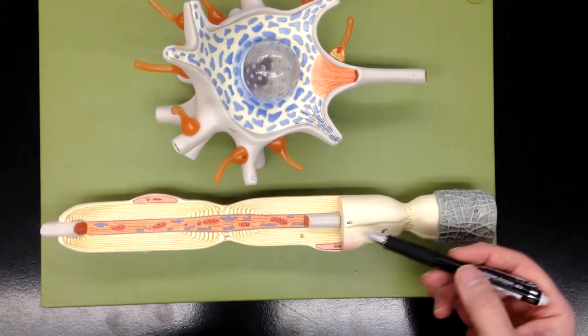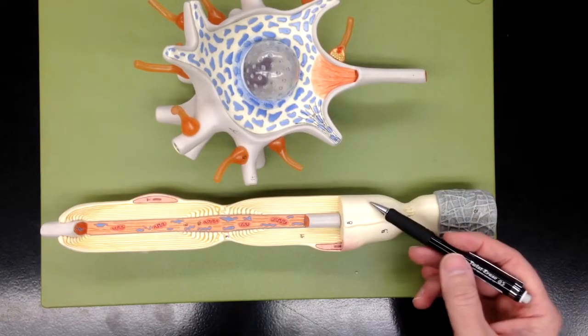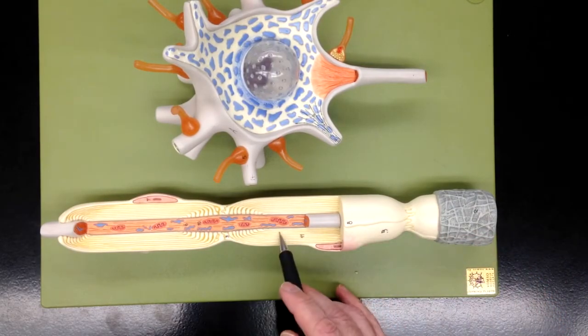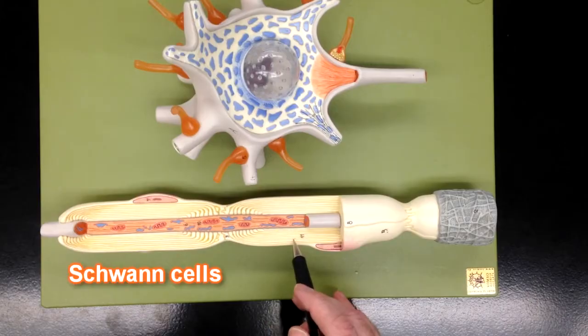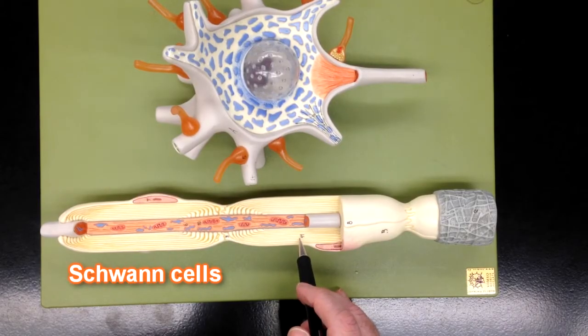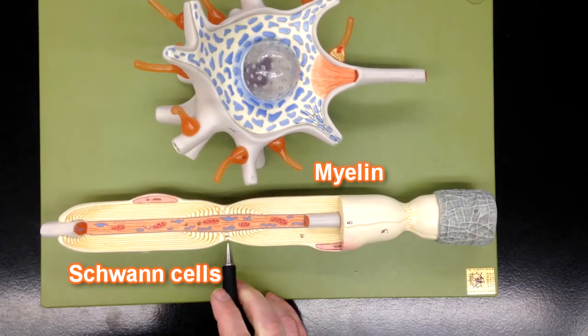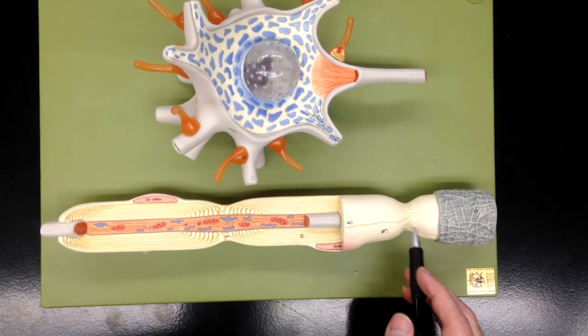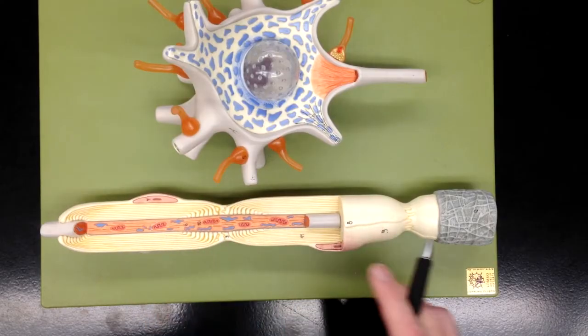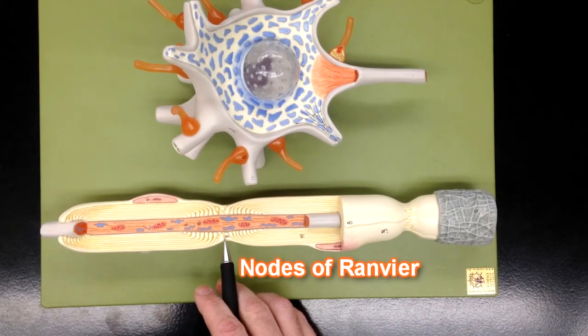We also have in this model these white cells that wrap around the axon—these are Schwann cells. Schwann cells make a fatty substance called myelin. These structures between the Schwann cells are the nodes of Ranvier.